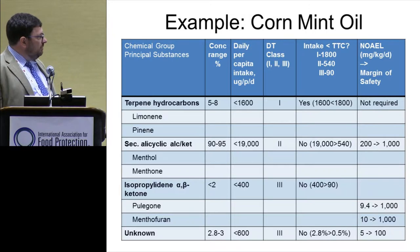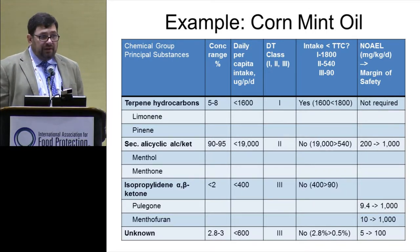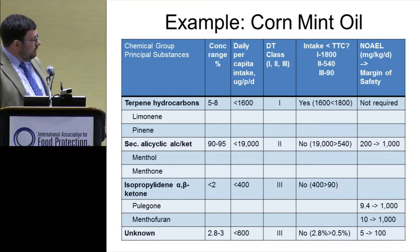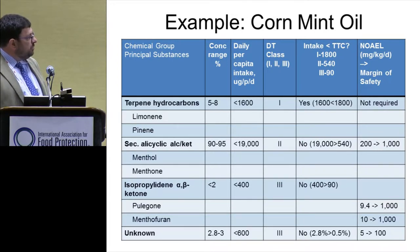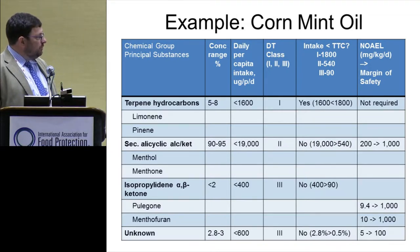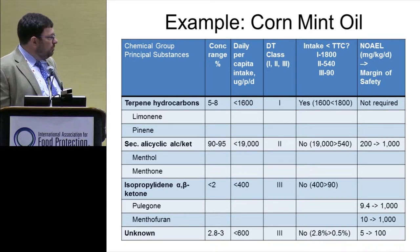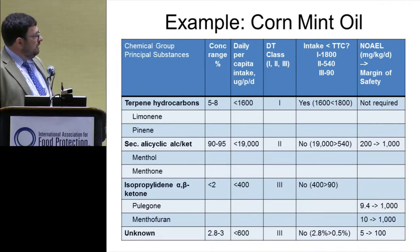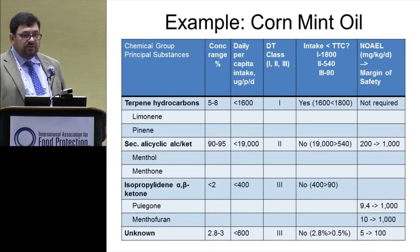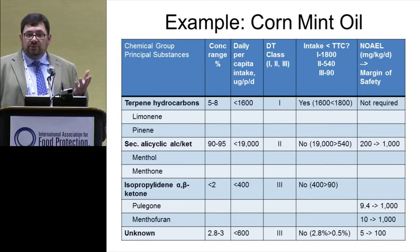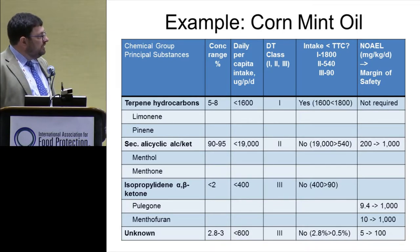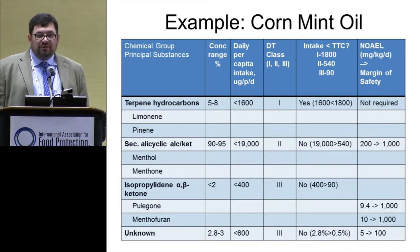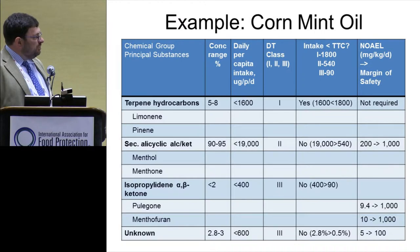The isopulegol-related alpha-beta ketone group — pulegon and menthofuran — are substances many will recognize as particular toxic concerns. This is a very small fraction of corn mint oil, but the intake is still about 400 micrograms per person per day. These are allocated within structural Class III, and 400 exceeds the TTC of 90 micrograms per person per day, so a NOEL is required — and we have them for both pulegon and menthofuran. For unknowns within NFCs, the panel estimates intake based on total unknown present, automatically assigns structural Class III, and asks whether an appropriate NOEL can be assigned — in this case from corn mint oil itself at 5 mg/kg body weight per day, providing a safety factor of about 100.